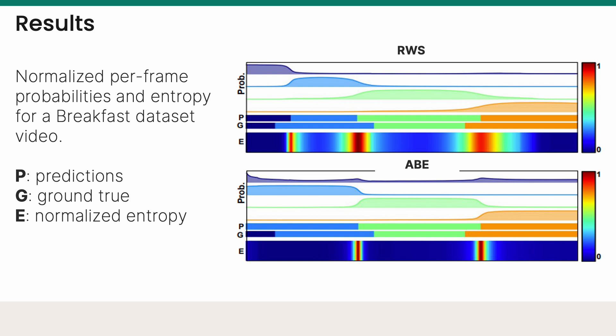As can be seen in the example, our method produces smoother action transitions, which better model the natural ambiguity of the boundary locations.